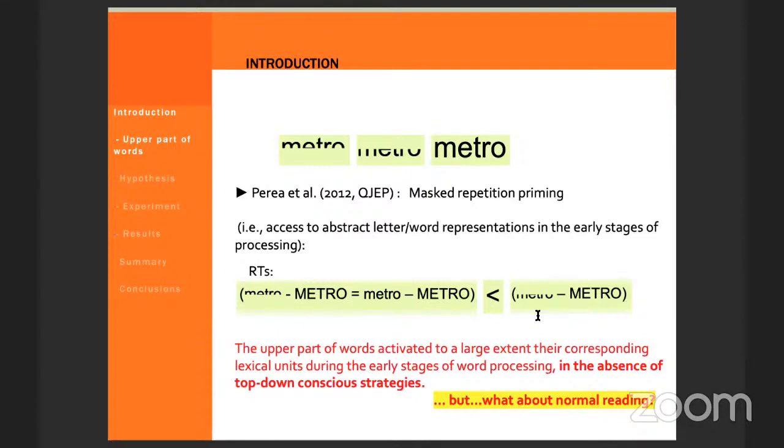Perea and colleagues found that the latencies for word targets like Metro were faster when preceded by either the upper part or the prime itself compared to targets being preceded by their lower part. What this shows is that the cognitive system is able to compensate for the missing information in the earlier stages of word processing. In other words, the upper part of words activate to a large extent their corresponding lexical units during the earlier stages of word processing in the absence of top-down conscious strategies.